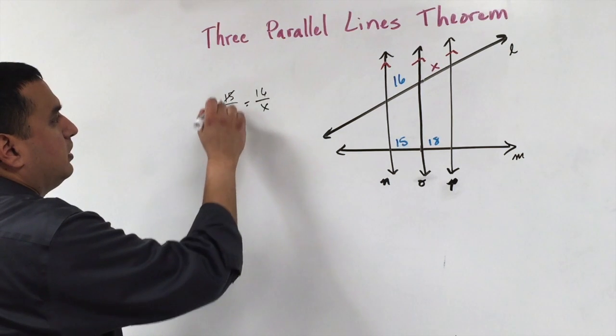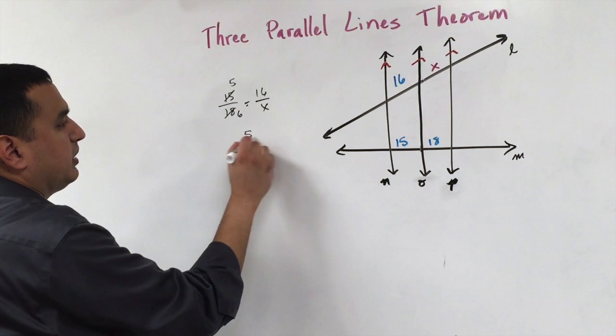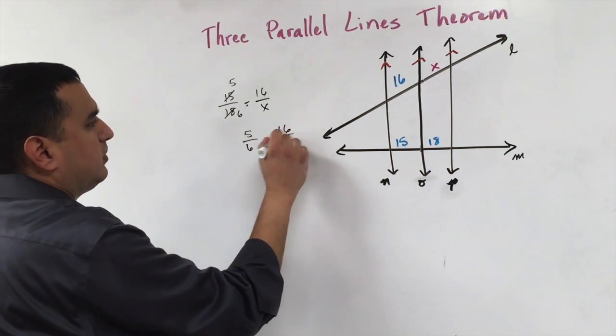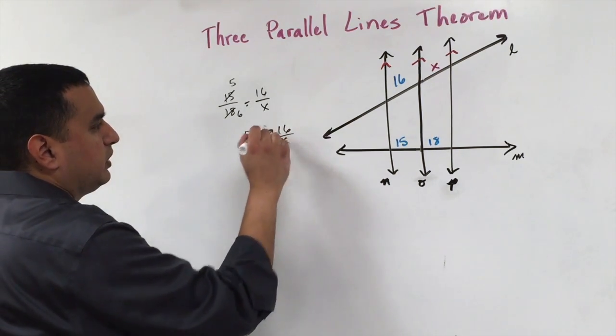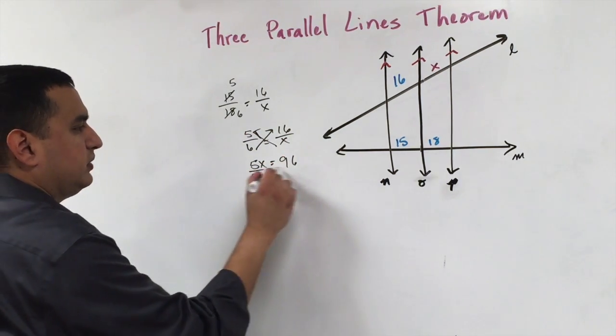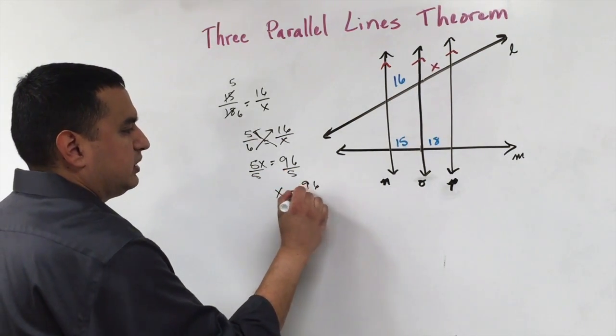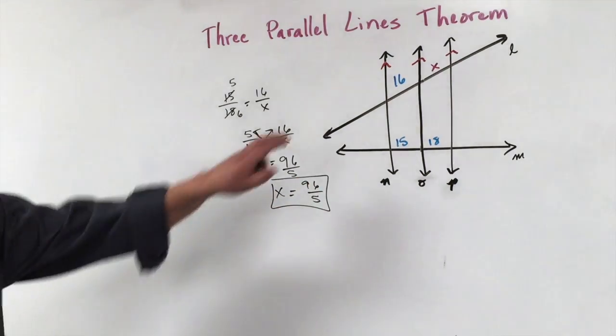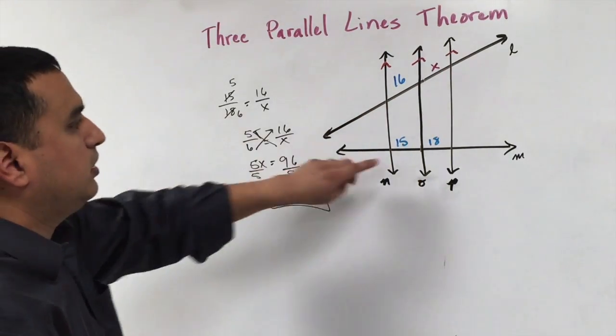I'm going to go ahead and factor three out of each of these. So that's going to give me five, and this will give me six, to make the math easier in my head. Five over six is equal to 16 over X. We cross multiply, giving me five X is equal to 96. Divide both sides by five. So that tells me this length X is going to be equal to 96 over five. But again, these three lines have to be parallel in order for me to be able to set up my proportions this way.